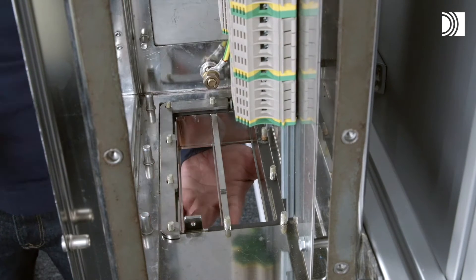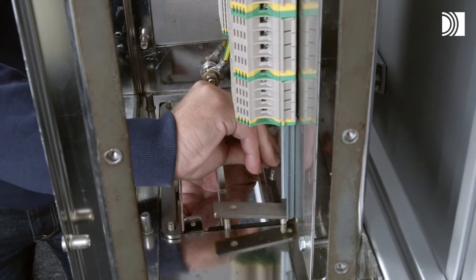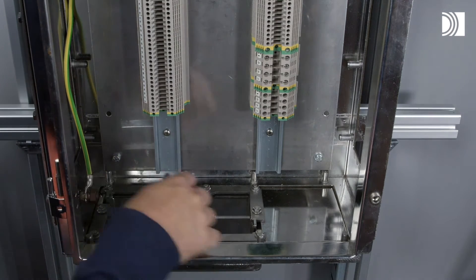Attach the two counter frame parts from the inside of the cabinet. Tighten the nuts crosswise in small steps.